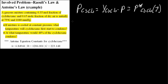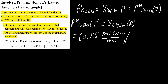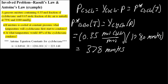P* cyclohexane at our given temperature equals Y_cyclo times pressure. We have a mole fraction of 0.35 for cyclohexane, and our pressure was 1080 millimeters of mercury. So P* cyclohexane equals 0.35 times 1080 millimeters of mercury, which gives us 378 millimeters of mercury.